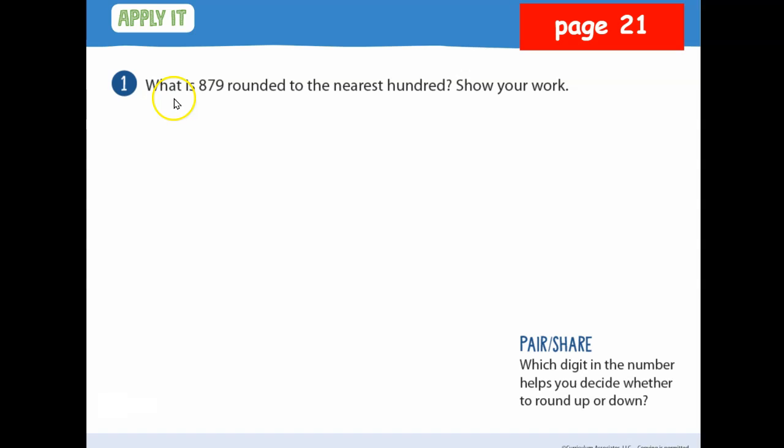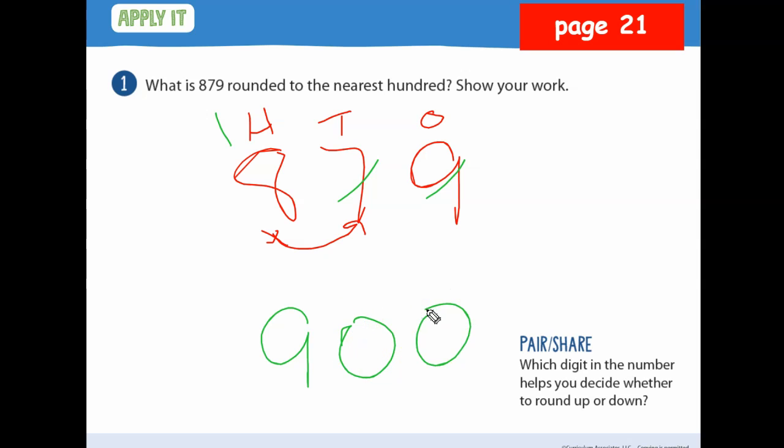So on page 21, you see that question number one, where it says what is 879 rounded to the nearest hundreds though? Let's do this together. I got 879. What number is in the hundreds place? Eight. Not seven. Did I say 700? No. I said 879 because the nine is in the ones, the seven is in the tens, and the eight is in the hundreds. So what number is in the hundreds place? Eight. I put a little X underneath. Look at the number to the right. What does the seven say to do to the eight? Add one. So what's one plus eight? Nine. And replace these two numbers with zero. That's what you should have.